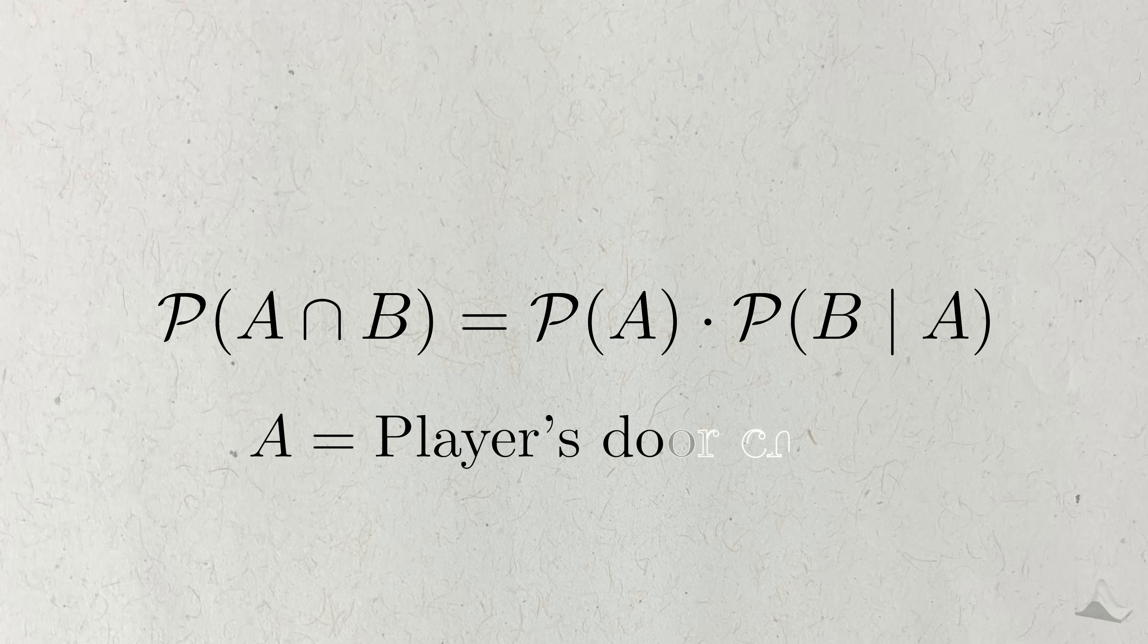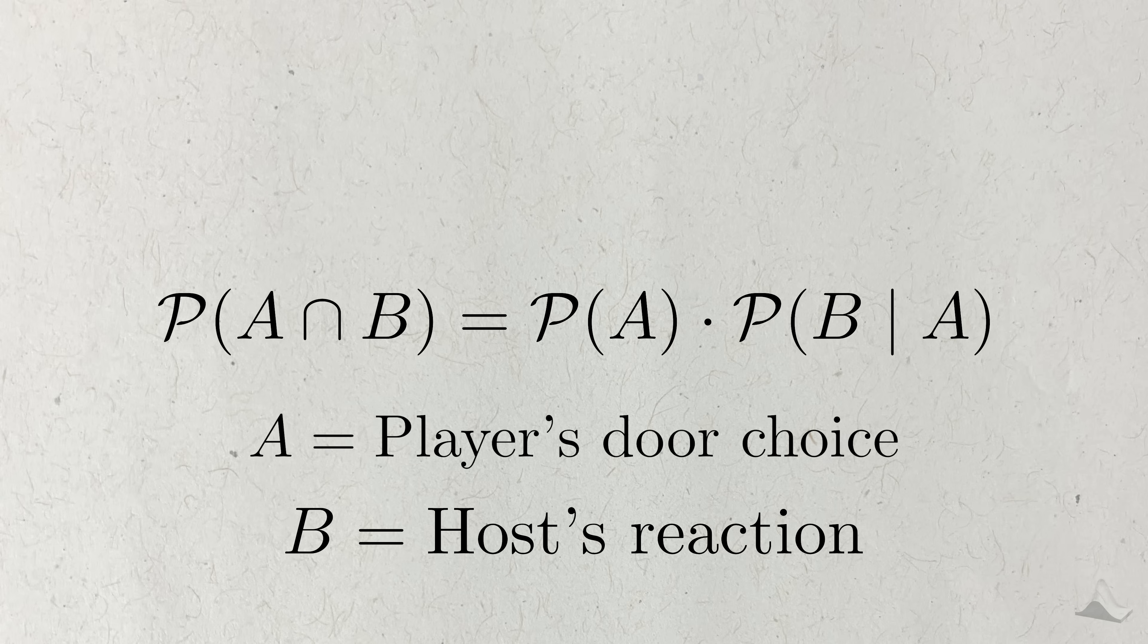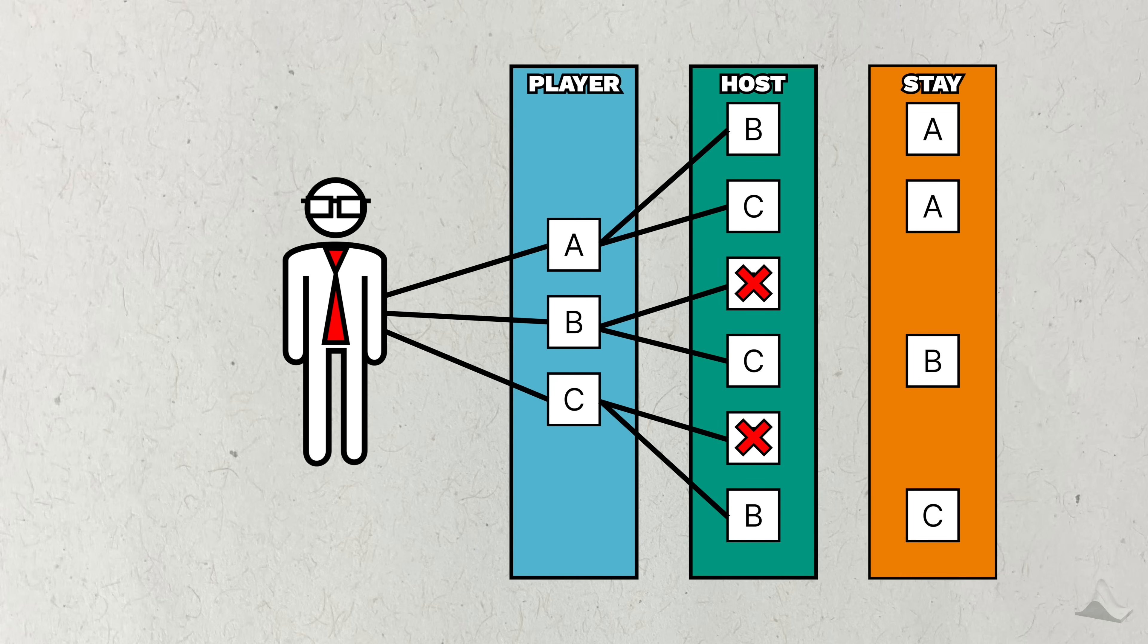In this case, the first event is the player picking one of the three doors, and the second event is the host picking a second door in reaction to what the player did. Let's consider the stay strategy first. For these two paths, the probability of picking A is one-third, and the probability of the host picking either of these doors is one-half.